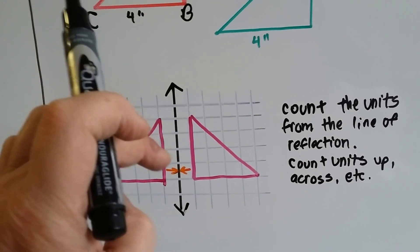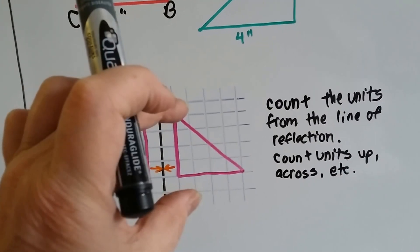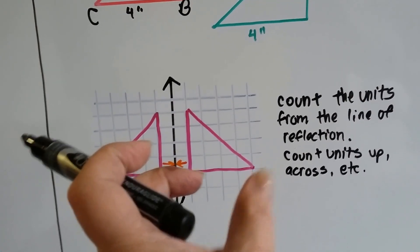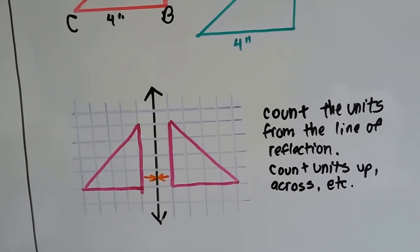And it's 1, 2, 3, 4 units tall, so we make that one 4 units tall. It's 4 units wide, so we make it 4 units wide, and then we draw our hypotenuse line.